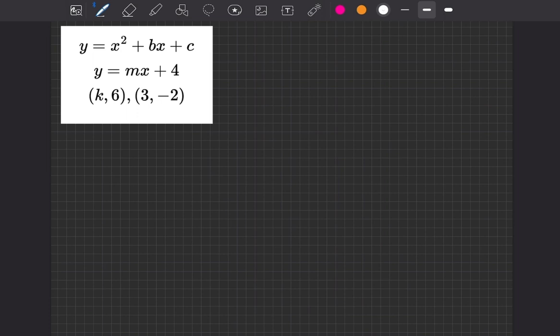So y is now 6, x is now k. What we're going to get then is y replaces with 6, equals x squared, which is now k squared, plus bx, which is now plus bk, plus c.